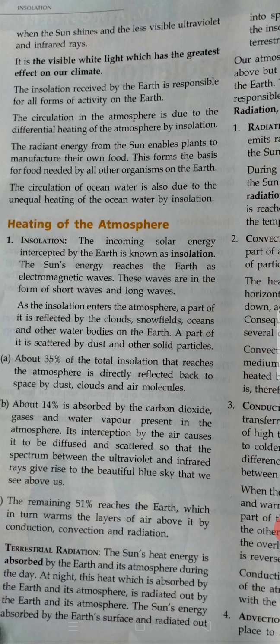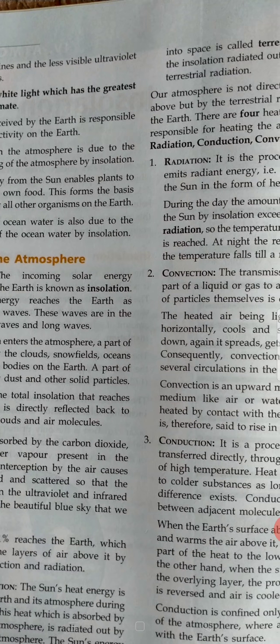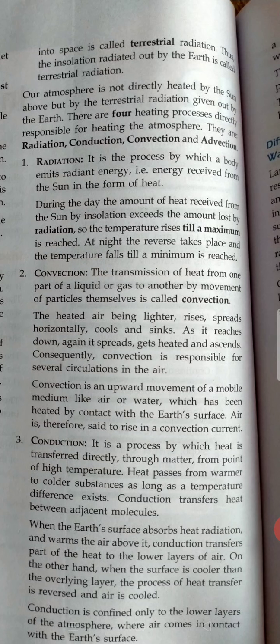The sun's heat energy is absorbed by the earth and atmosphere during the day. At night, the heat that was absorbed by the earth and atmosphere is radiated out when things cool down. The energy absorbed by the earth's surface and radiated out into space is called terrestrial radiation.